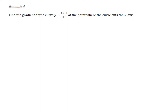Let's take a look at Example 4, which is a kind of word problem. Find the gradient of this curve at the point where the curve cuts the x-axis. We don't know how this curve looks and we don't really care — just imagine the curve looks something like this. We're interested in the gradient of this curve, and as discussed earlier, the gradient of a curve is different at every point.